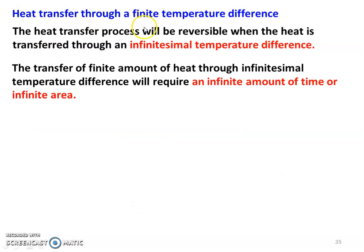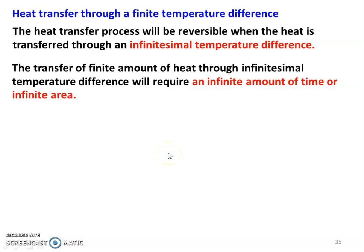First, heat transfer through finite temperature difference. A heat transfer process will be reversible when the heat is transferred through an infinitesimal temperature difference. What is infinitesimal temperature difference? Delta T equal to 0.01 — that is infinitesimal temperature difference. Delta T equal to 10 or delta T equal to 1 are finite temperature differences, which make the process irreversible.